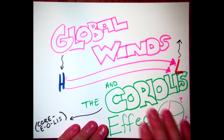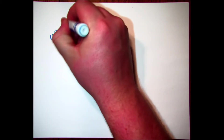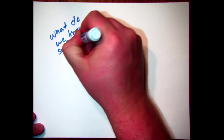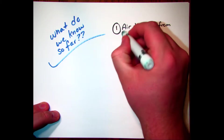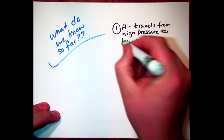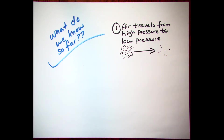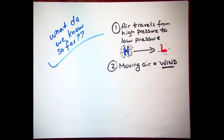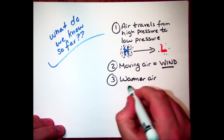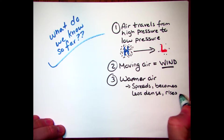We're going to talk about global winds and the Coriolis effect, which cause air circulation in our atmosphere and around the world. What do we know already? Air travels from high pressure to areas of low pressure — whenever there's a lot of air, it wants to leave and go to areas where there's not as much, to equalize. High pressure is labeled with a blue H, low pressure a red L. Moving air is wind. When air gets warmer it spreads out, becomes less dense, and rises.